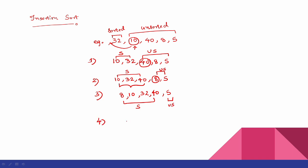Next iteration. The first 4 elements are sorted, the last one is unsorted. The unsorted element is 5. We compare 5 with 32 - move. Then 10 is greater than 5 - move. Then 8 is greater than 5 - move. Finally, an empty space is created. We place 5 and it is set. Now sorted.